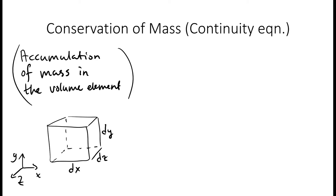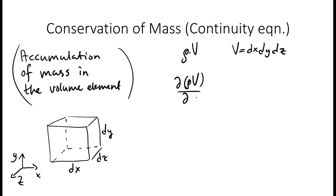For the accumulation of mass in the volume element, we first have to define the mass in the volume element. The mass is given by the density of the fluid times the volume of the fluid. The volume in this case is given by dx, dy, dz. And we can note that dx, dy, dz is not a function of time — it's constant in time.